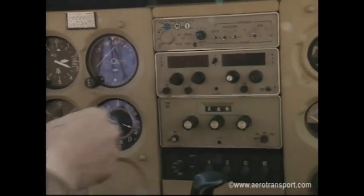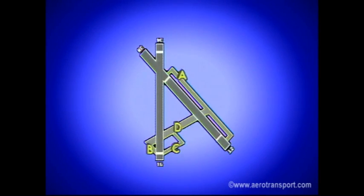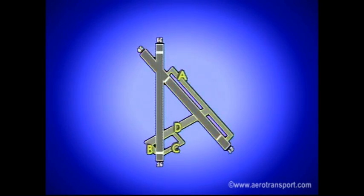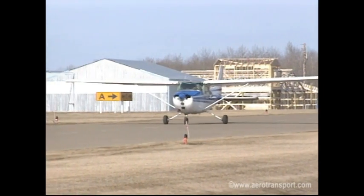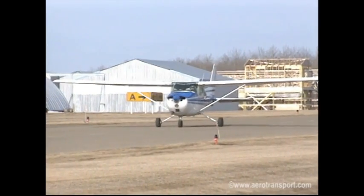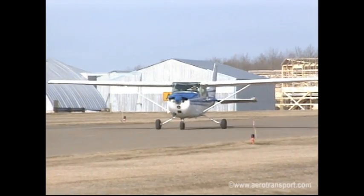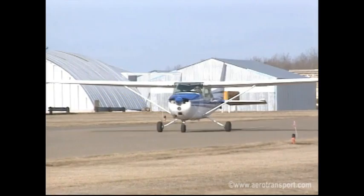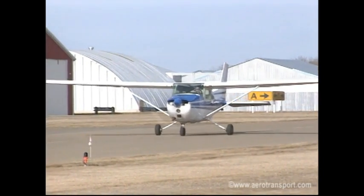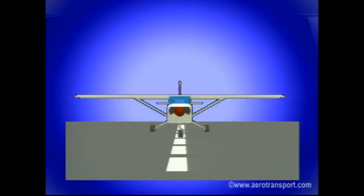At all controlled and some uncontrolled airports, taxiways are identified by names from the phonetic alphabet — Alpha, Bravo, Charlie, Delta, Echo, and so on. At smaller, less complex airports they may be identified by numbers. Airports with only one taxiway may have no special identifier at all.